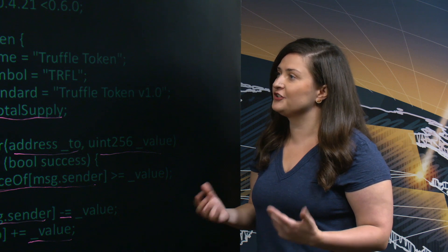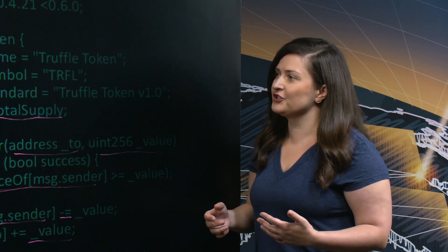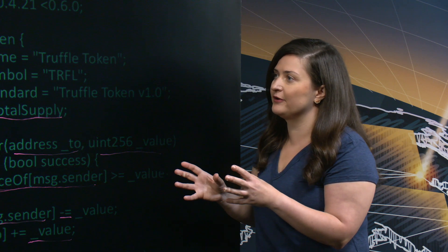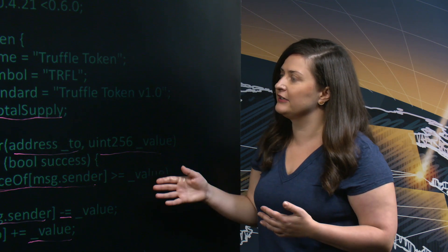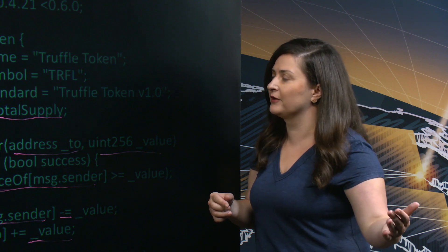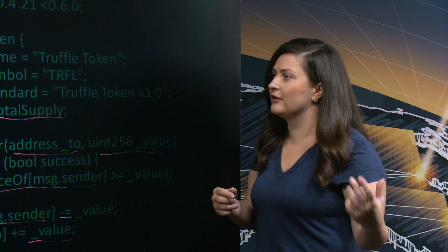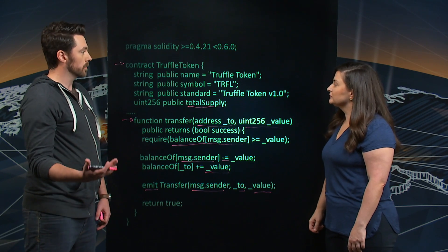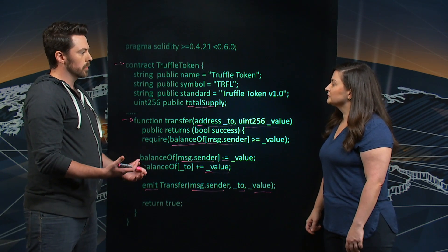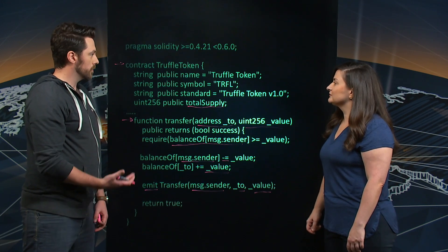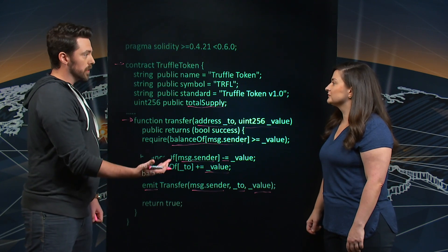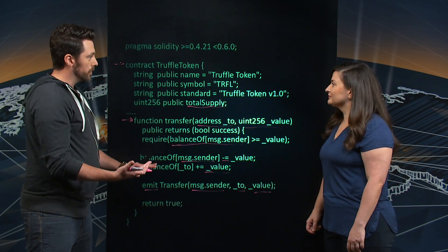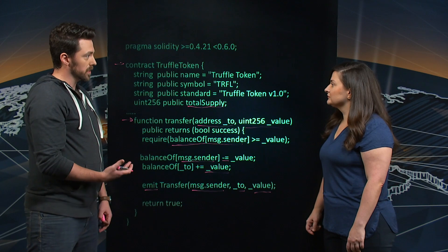When building blockchain applications or smart contracts, you typically use different environments for development versus production. How do I promote code from testing on Ganache to a final network like an AWS Ethereum template? Truffle lets you deploy to many different blockchains — that's one reason we wanted to be blockchain agnostic. You can set up different chains: Ganache as your local environment to deploy, run tests, and make sure everything is perfect before sending it to a staging environment.